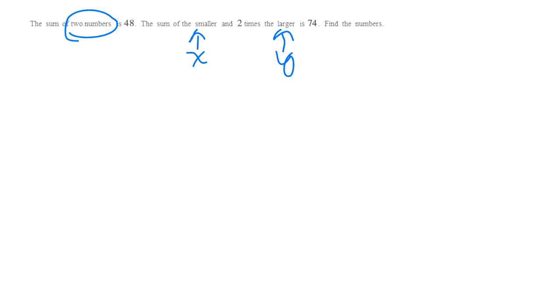So I can write two different equations here. Let me see if I can use a highlighter. I don't know if I can or not. Okay. So I'll just change colors. And I'm going to say the sum of the smaller and two times the larger is 74. There's one equation. And here is the other equation. The sum of two numbers is 48. So sum means add. So that first equation is X plus Y equals 48.